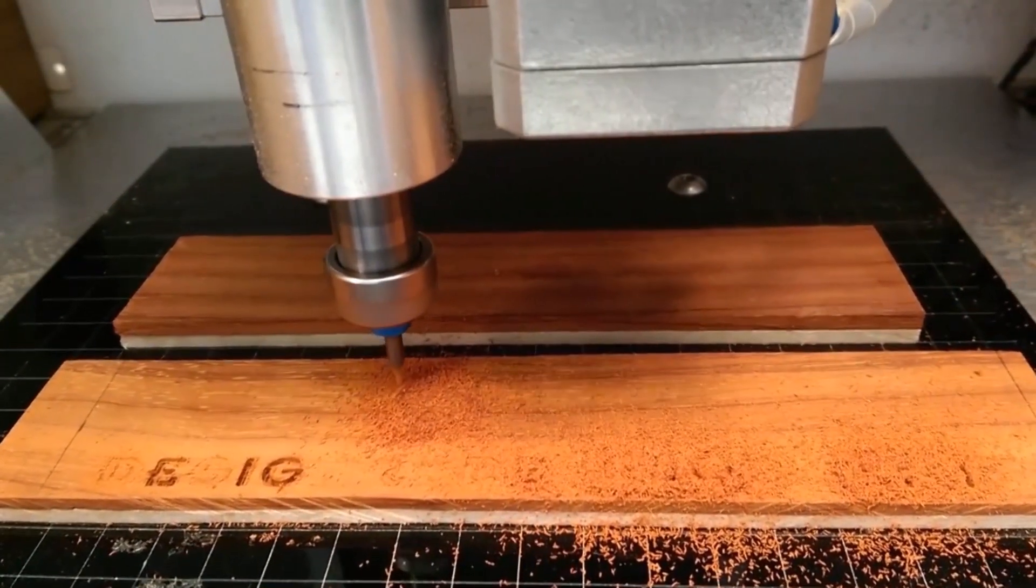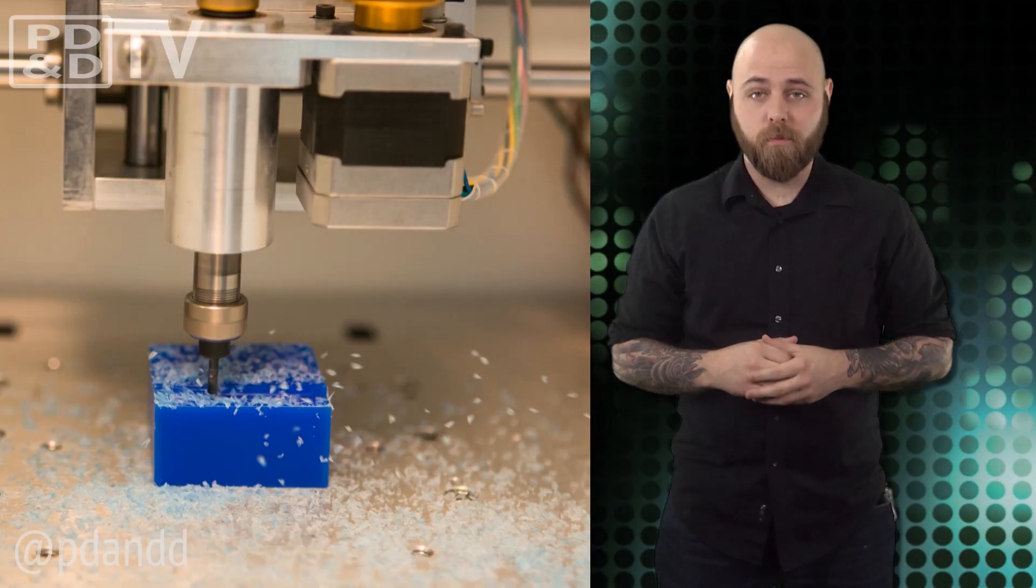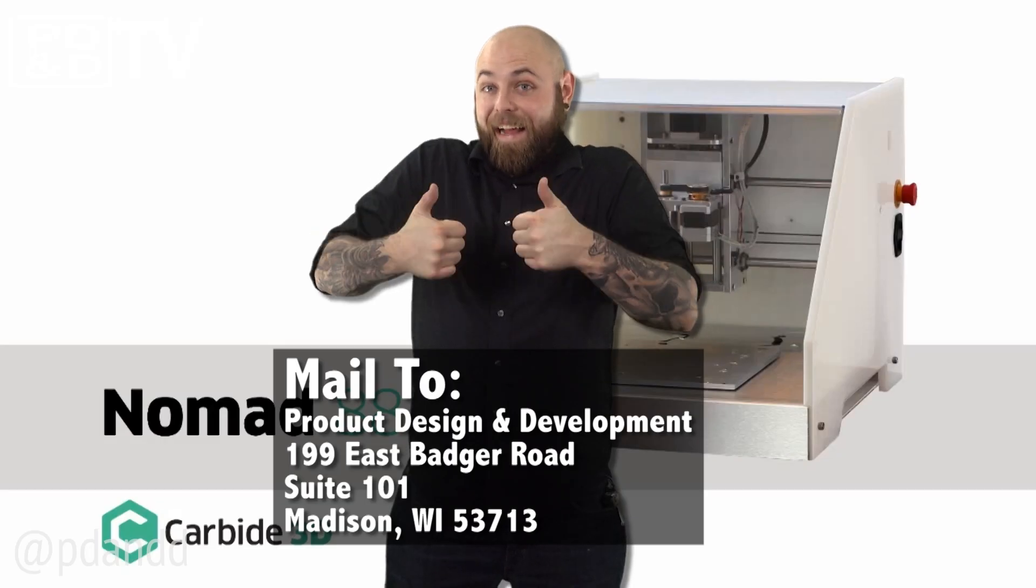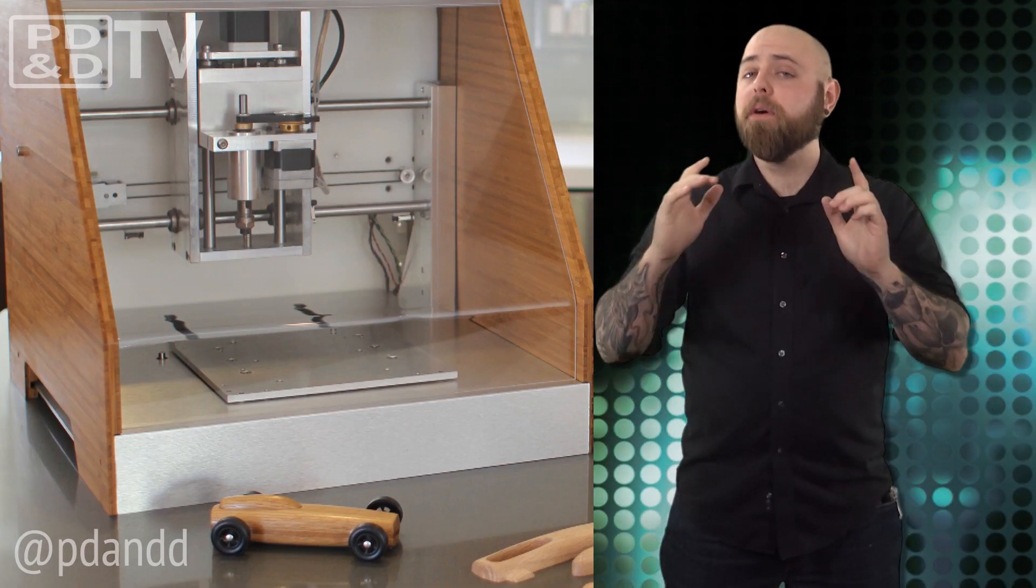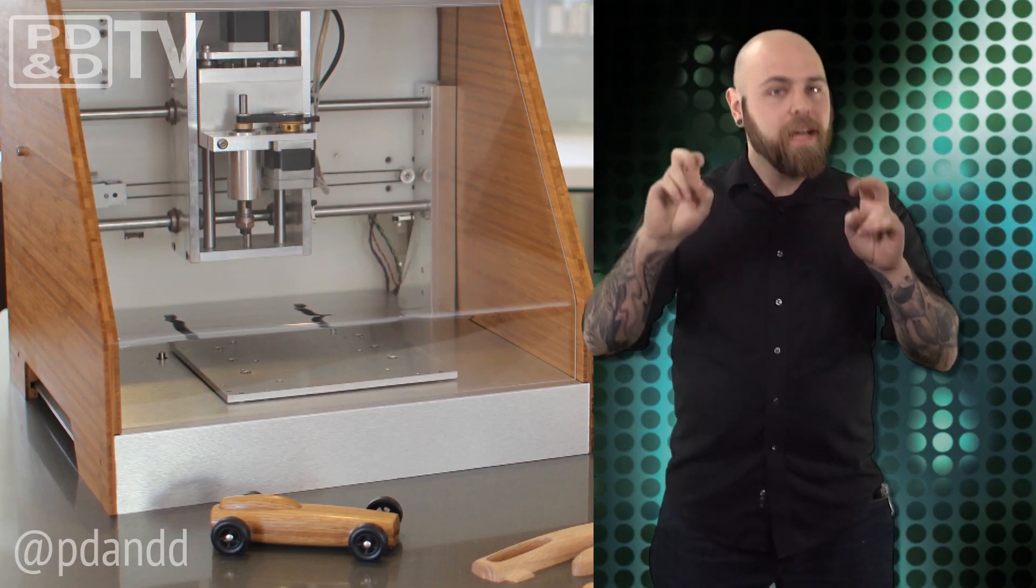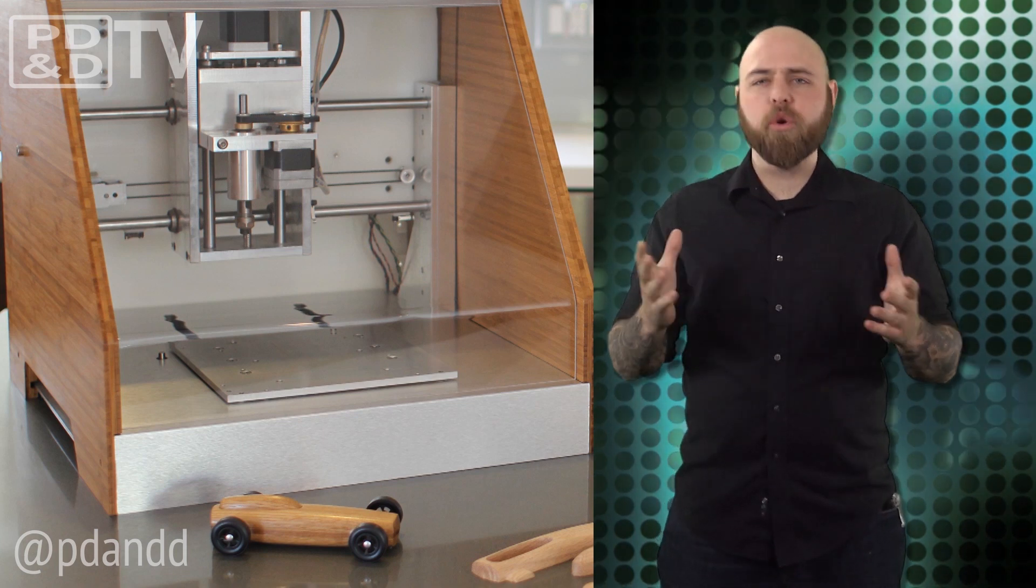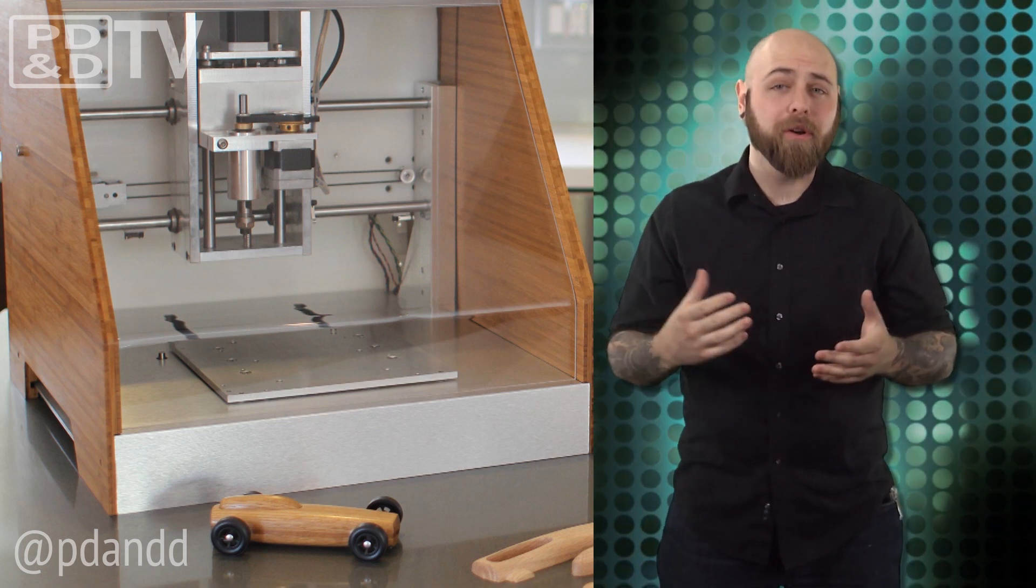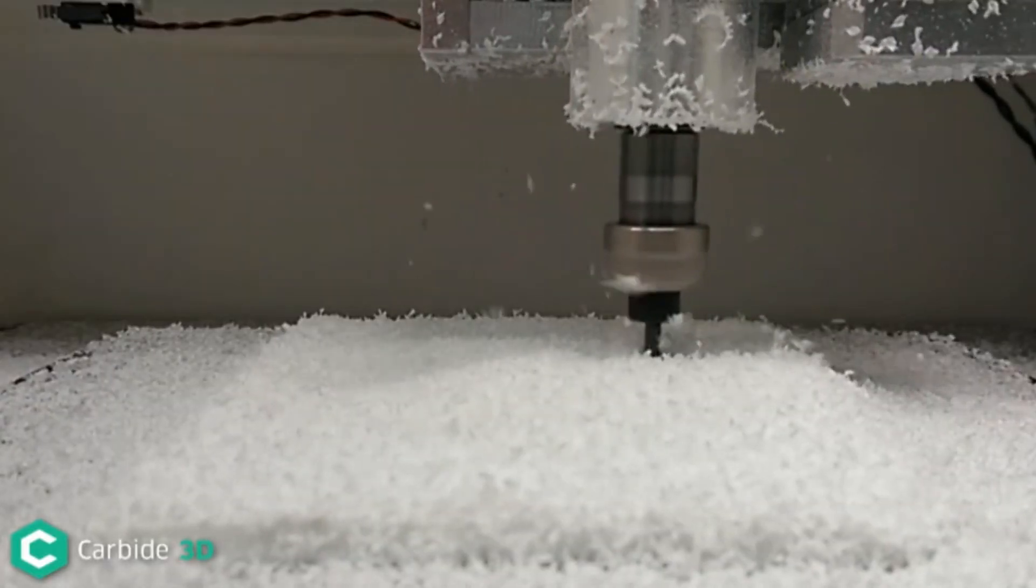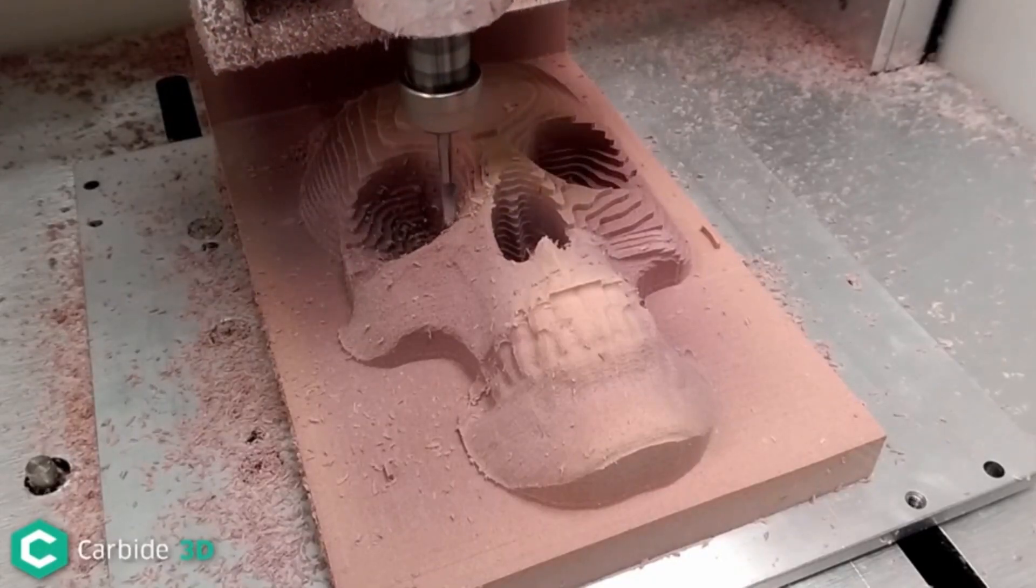This mill gives engineers and hobbyists, or PD&D editors, the opportunity to mill components on their desktops. Though the Nomad is strictly a desktop CNC, meaning there's no coolant and the max tool size is a quarter inch, it can handle soft metals and composites, and it can mill everything from aluminum to wood faster than its bigger counterparts.